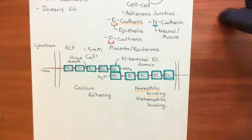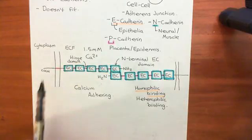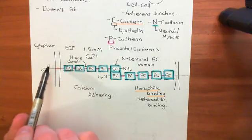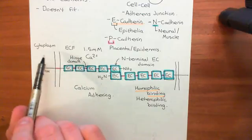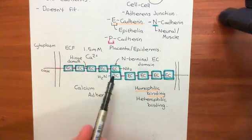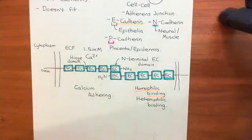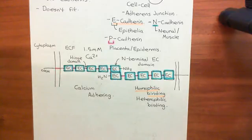We'll call it there for this video. In the next video, we'll start studying what molecules are bound to the cytoplasmic C-terminus of these classical catherin proteins, and how those attach to actin filaments of the cytoskeleton. Then we'll come on to how they all aggregate together to make a much larger, much stronger interaction between two cells, known as an adherence junction.